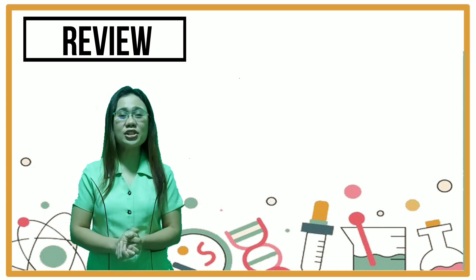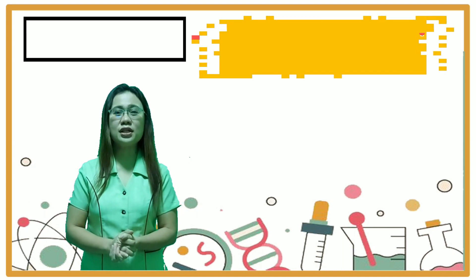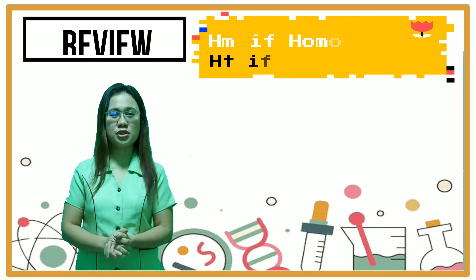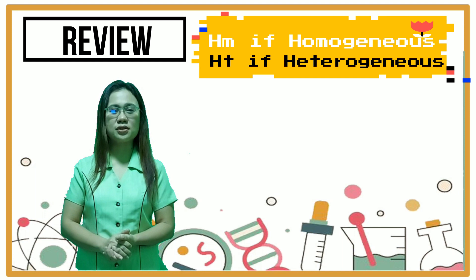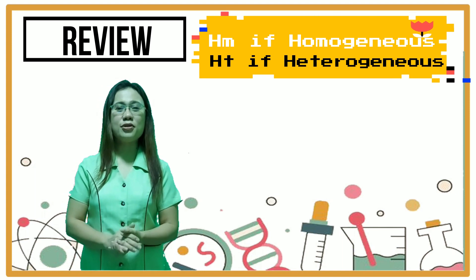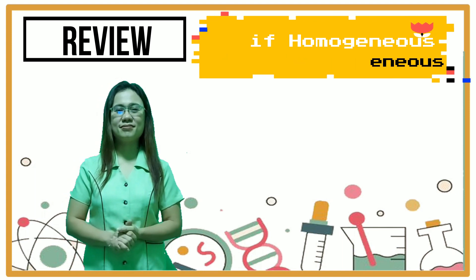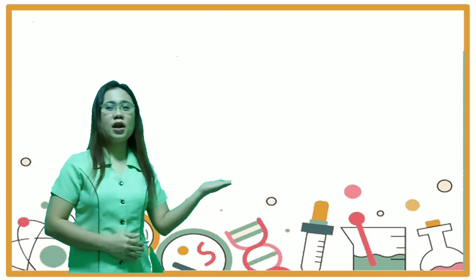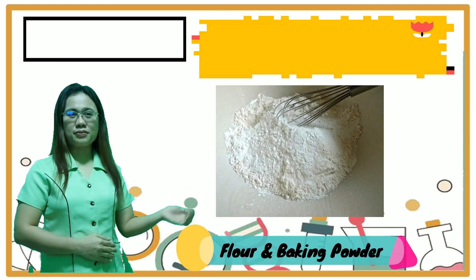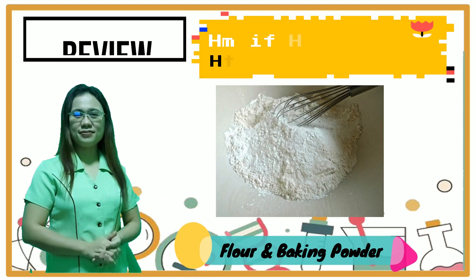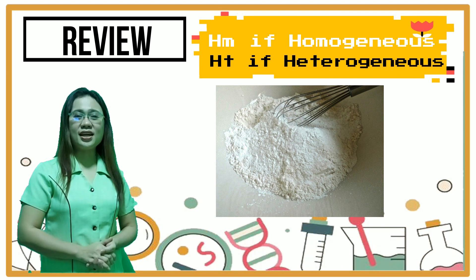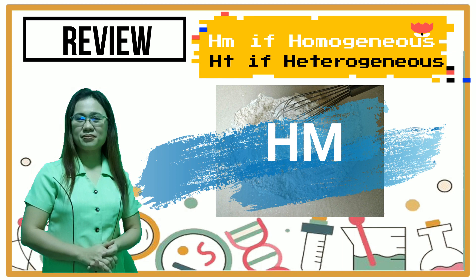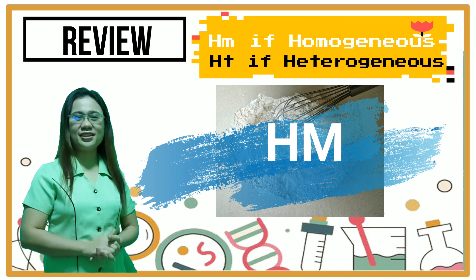Write HM if the given is a homogeneous mixture and HD if heterogeneous. Number one: flour and baking powder. Yes, it's HM. You got it right!